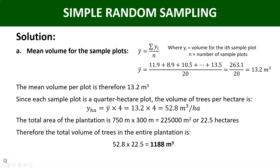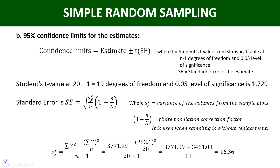Now we are left with part (b): the confidence limits for each estimate. The formula is: estimate ± t × standard error, where t is the Student's t-value from the statistical table at n − 1 degrees of freedom and 0.05 level of significance. At 19 degrees of freedom and 0.05 significance, t = 1.729.